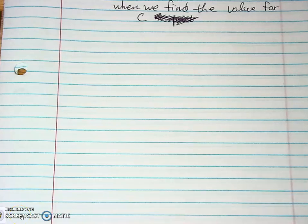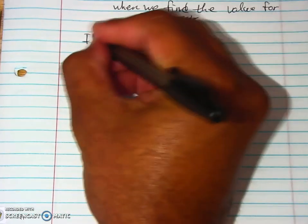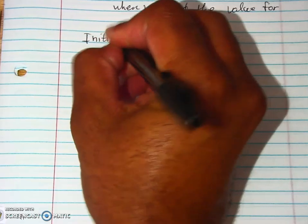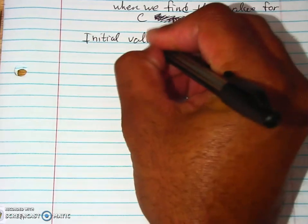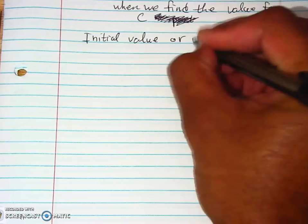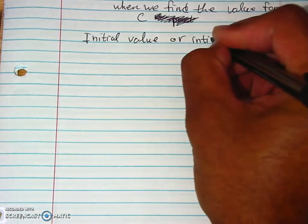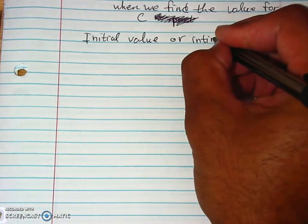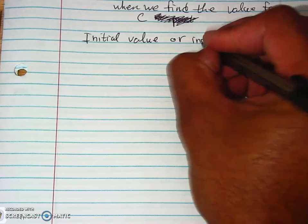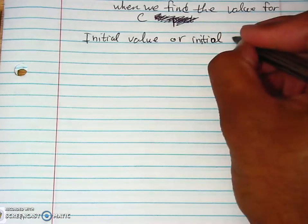All right, so continuing on with this, we're going to go to example one, but there's one set of information I left off. Now, normally they will give you something called the initial value or initial condition. So initial condition, initial condition.